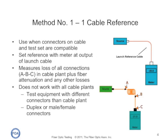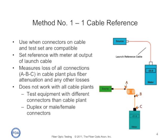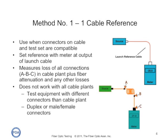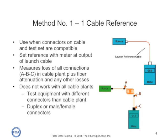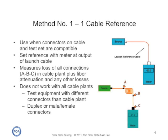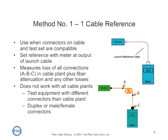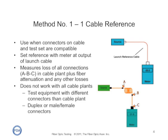The first method uses a one-cable reference. We attach our reference cable to the source, then attach it to a meter and measure its output power. We then connect the source to the cable plant at point A. On the other end of the cable plant, we attach another reference cable — the receive reference cable — and use that to connect to our fiber optic power meter. Since we know the output of the launch reference cable, we can measure the loss of the cable plant connection at A, any losses in the cable plant, and the connection at point B. So our measurement includes the connections on both ends of the cable and everything in between.